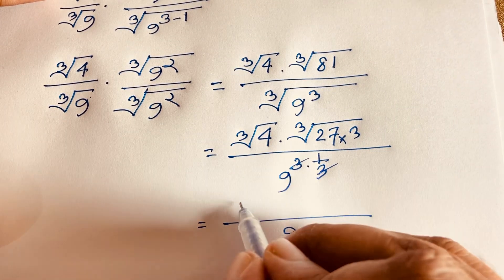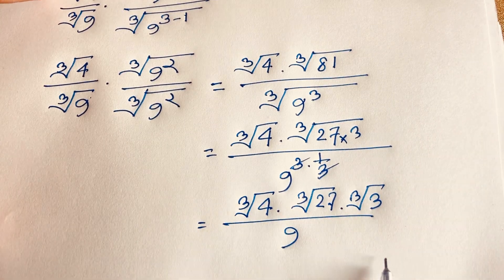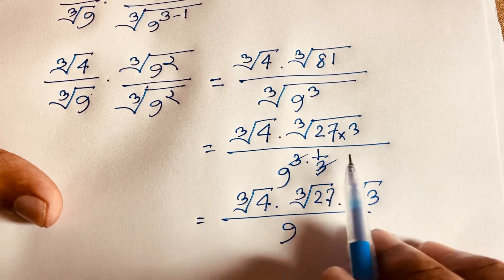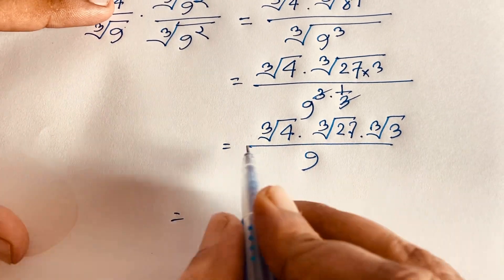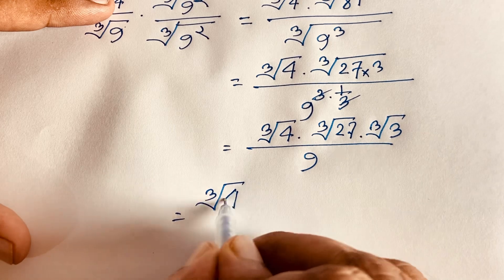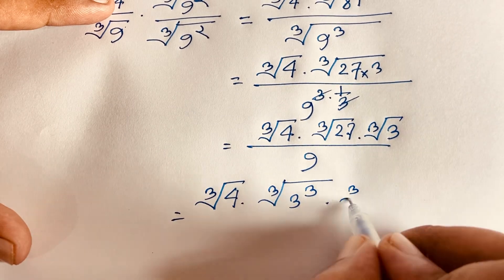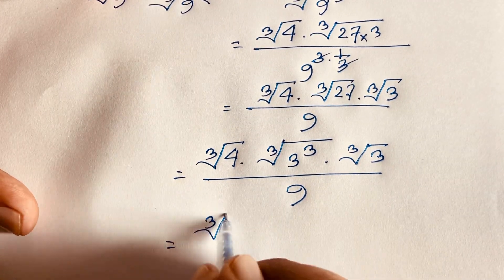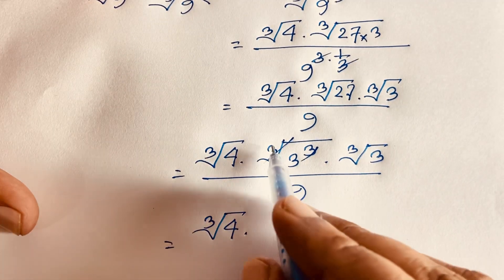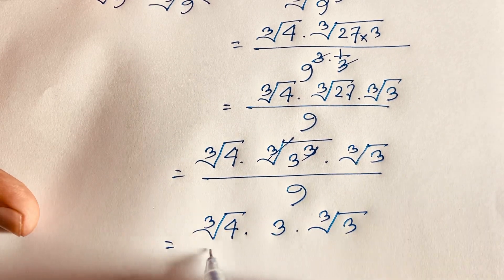Now we have cube root of 4 times cube root of 27 times cube root of 3, all over 9. We know that 27 equals 3 to the power 3, so cube root of 27 equals 3. We simplify: cube root of 4 times 3 times cube root of 3 over 9.